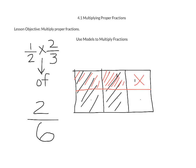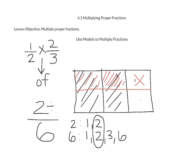However, we want to make sure that we simplify our answer as much as possible, and two sixths is not in simplest form. If we take a look at two and six, we want to see what their greatest common factor is. The factors of two are one and two. The factors of six are one, two, three, and six. The greatest common factor that two and six share is two. So we are going to divide both two and six by two. When we divide two by two, we get one. When we divide six by two, we get three. So our final answer of one half times two thirds is one third.